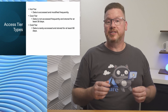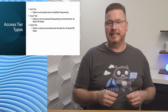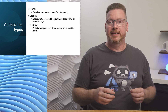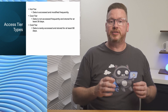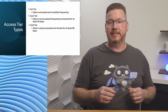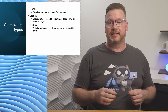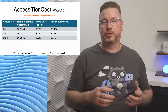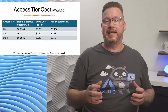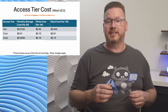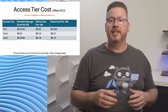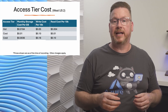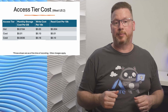Then we have the cold tier. This is for data that's rarely accessed, but there can't be any delays to access the data if it's needed — this could be a good option for backup data. Data in the cold tier should be stored for a minimum of 90 days, and just like the cool tier, there's a deletion penalty if removed before that. The storage cost is lower than cool at $0.0036 per gigabyte, but accessing the data is more costly: $0.18 to write and $0.10 to read per 10,000 operations.